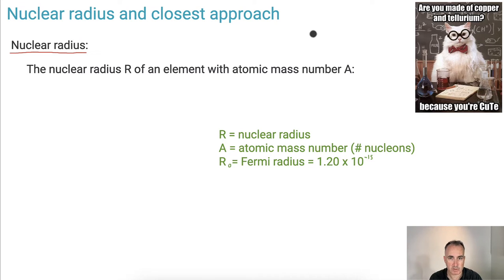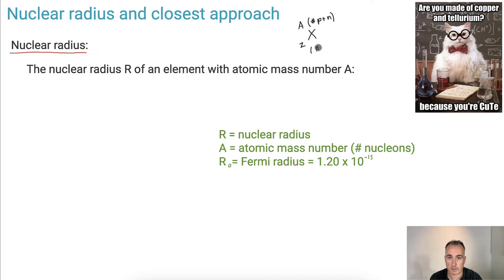Let's remind ourselves how we write these nuclides. The mass number A is the top number, and Z is the number of protons. So A is the number of protons plus neutrons — the number of nucleons — whereas Z is just the number of protons, and that tells you which element it is.